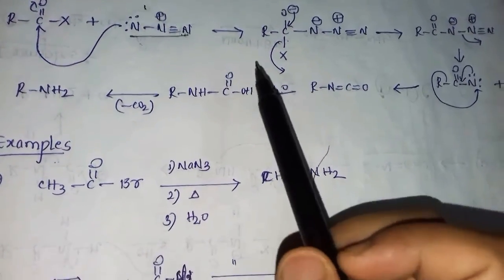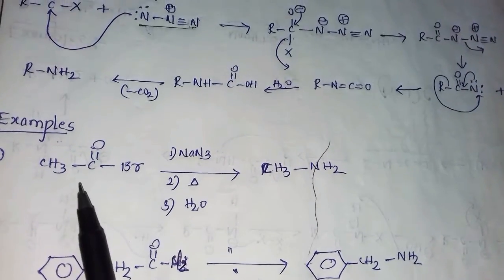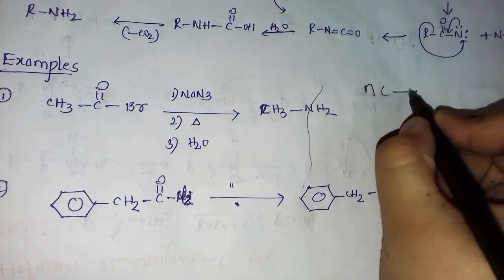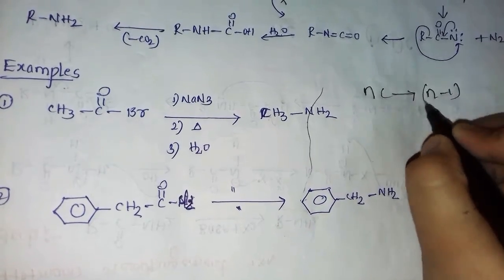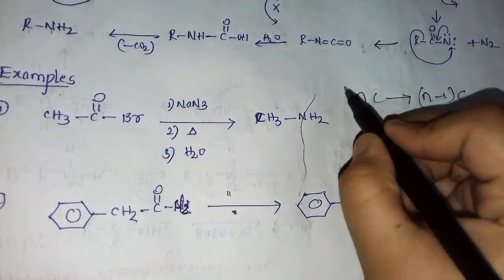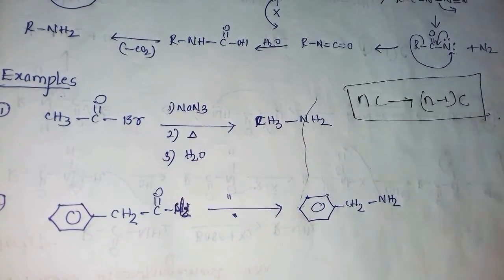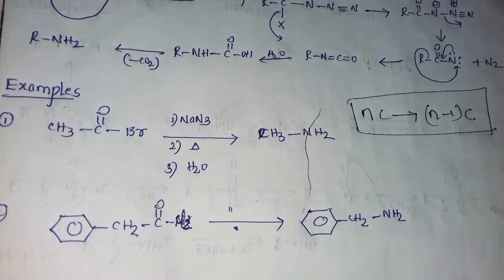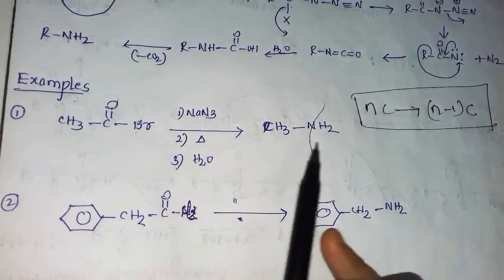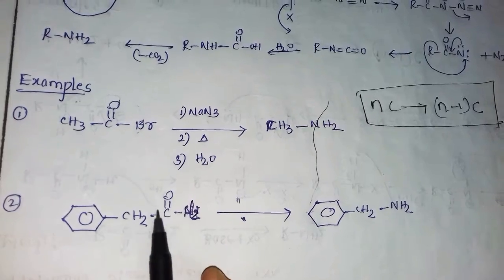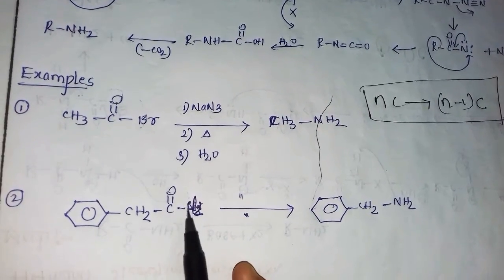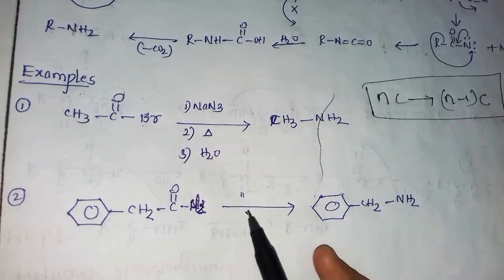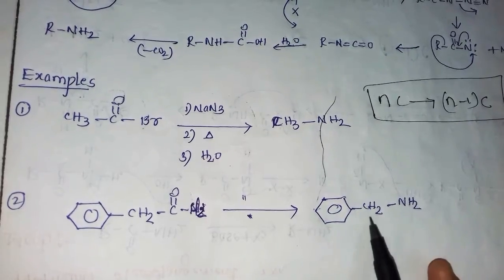Examples for Curtius rearrangement: again, the n to n-1 carbon rule applies — this is the main important point for all three reactions: Hofmann, Curtius, and Lossen. Remove this carbon and write the product directly. The same reagents apply.